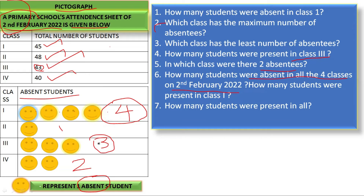How many students were absent in all 4 classes on 2nd February 2022? 4 + 3 + 2 + 1 = 10. Totally 10 students were absent on 2nd February 2022.